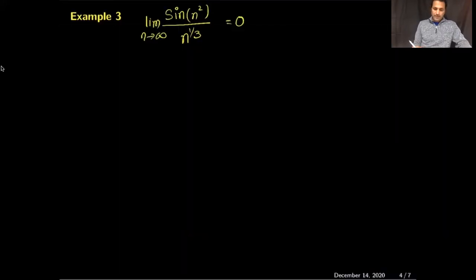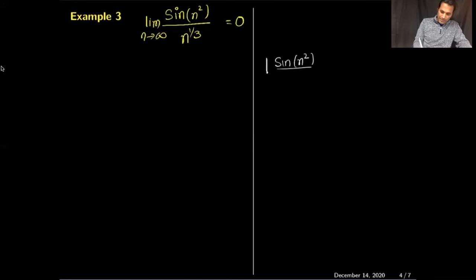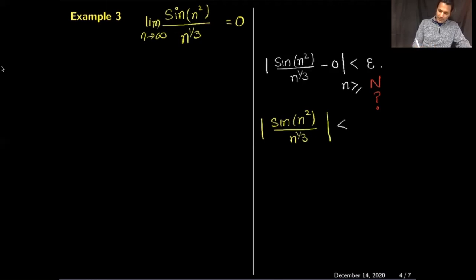Our third example: the limit as n→∞ of sin(n²) / n^(1/3). We begin with scratch work. I want to show |sin(n²)/n^(1/3) − 0| < ε when n is bigger than or equal to some capital N, and I need to find that N.